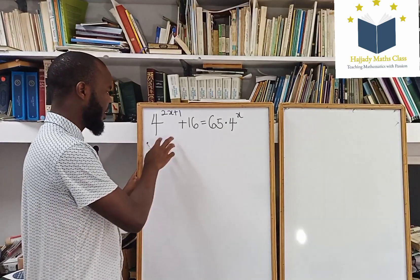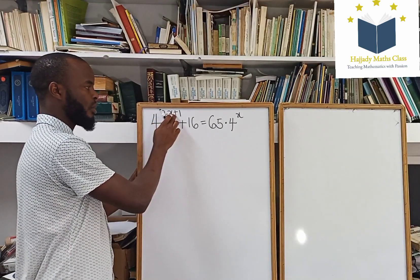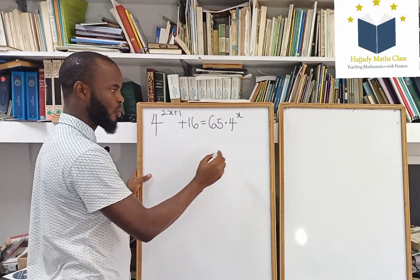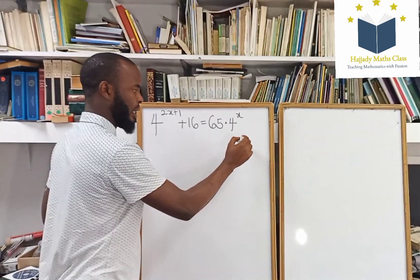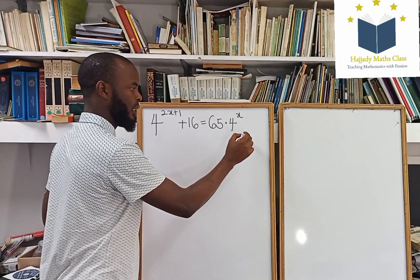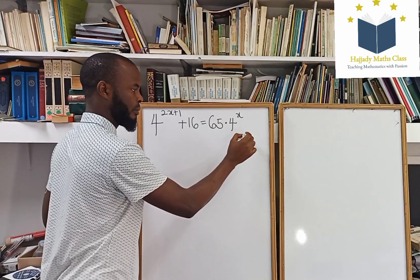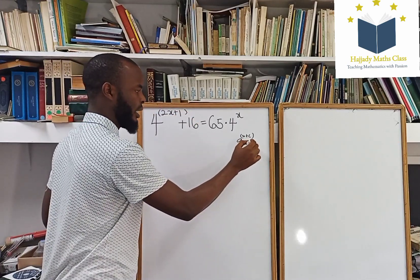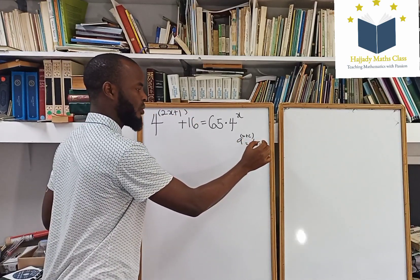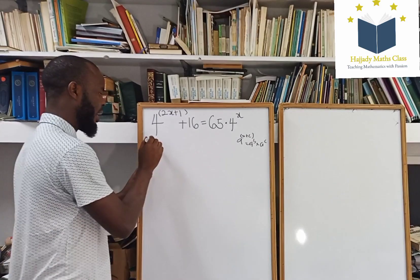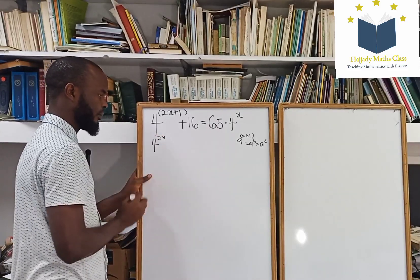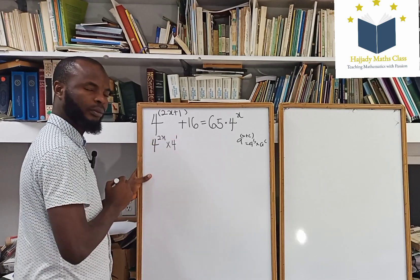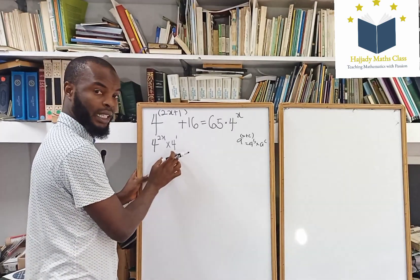Breaking this down here, 4 to the power of 2x plus 1 — don't forget the rule of indices that says a to the power of b plus c is the same thing as a to the power of b multiplied by a to the power of c. So here, I'm having 4 to the power of 2x multiplied by 4 to the power of 1; the same base must be intact.